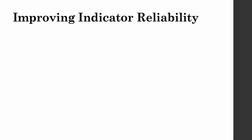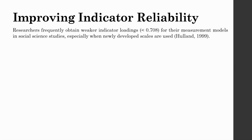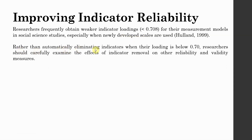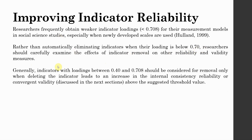How do we improve indicator reliability if it is less than the threshold value? Researchers frequently obtain weaker indicator loadings — less than 0.708 — in social science studies, especially when newly developed scales are used. Rather than automatically eliminating indicators, researchers should carefully examine the effects of indicator removal on reliability and validity. Generally, indicators with loadings between 0.40 and 0.708 should be considered for removal only when deleting them leads to an increase in internal consistency reliability or convergent validity.